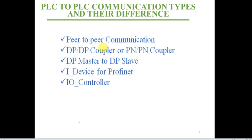The first type is peer-to-peer communication, where two PLCs are connected directly and share data — they must be under the same network. The second type uses a coupler, like a DP coupler for Profibus and a PN/PN coupler for Profinet. The third type is master and slave, which is for Profibus.